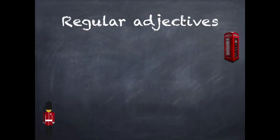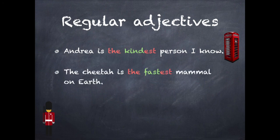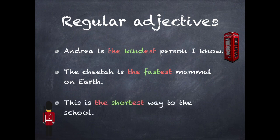Now we are going to see some examples. First, regular adjectives: 'Andrea is the kindest person I know' — Andrea es la persona más amable que conozco. 'The cheetah is the fastest mammal on earth' — El guepardo es el animal más rápido de la tierra. 'And this is the shortest way to school' — Este es el camino más corto a la escuela.